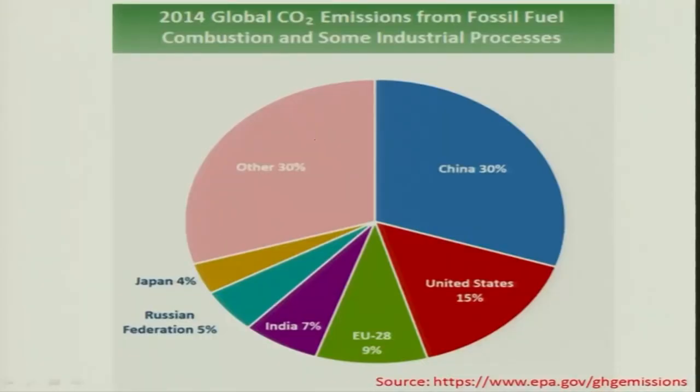India accounts for only 7 percent of global CO₂ emissions with 130 crore people, which is very low. If we minimize our energy utilization we can solve the problem and achieve self-sustaining development by moving toward agro-based energy production and consumption. A lot of work can be done in the combustion field provided we understand combustion fundamentals. In the next lecture we will start the thermodynamics of combustion. Thank you very much.